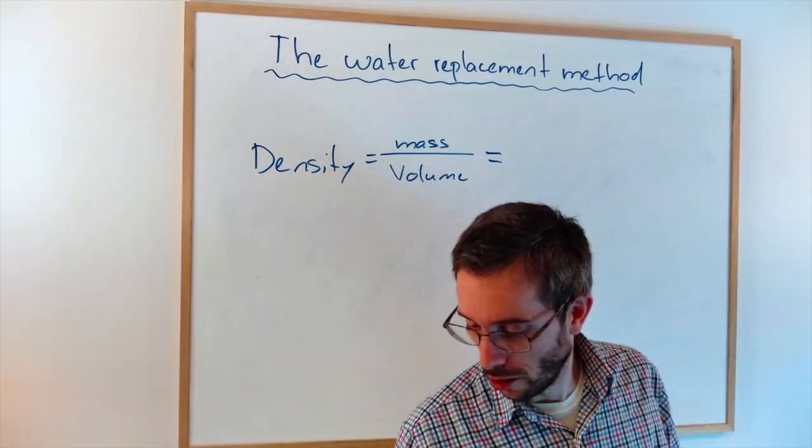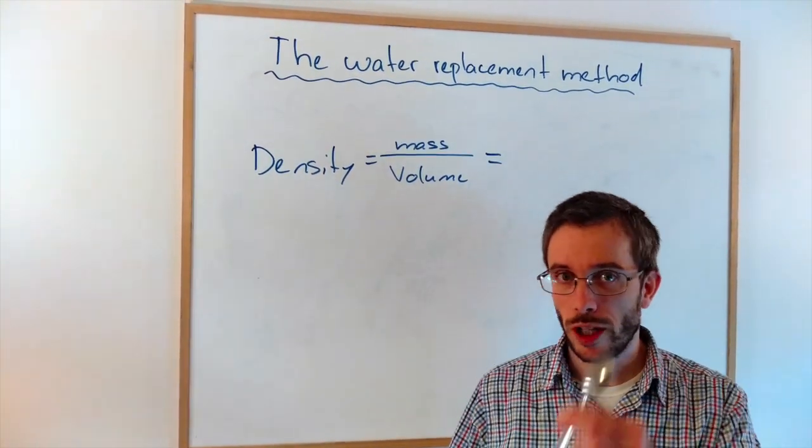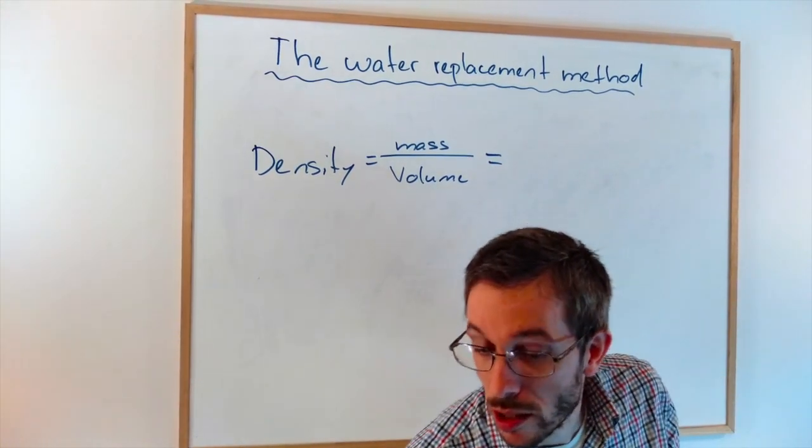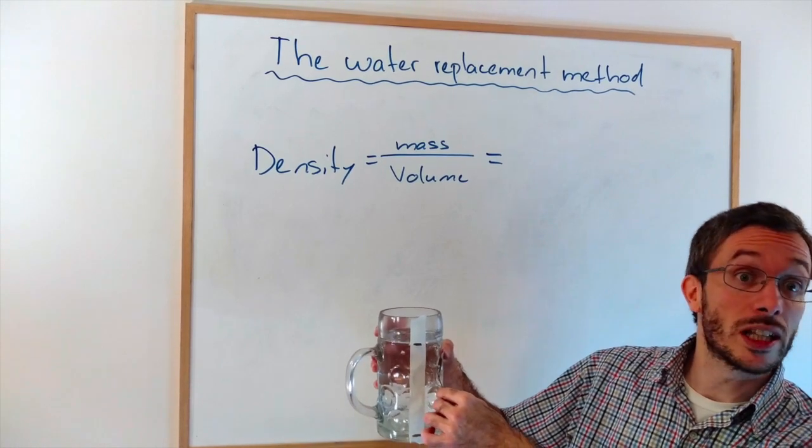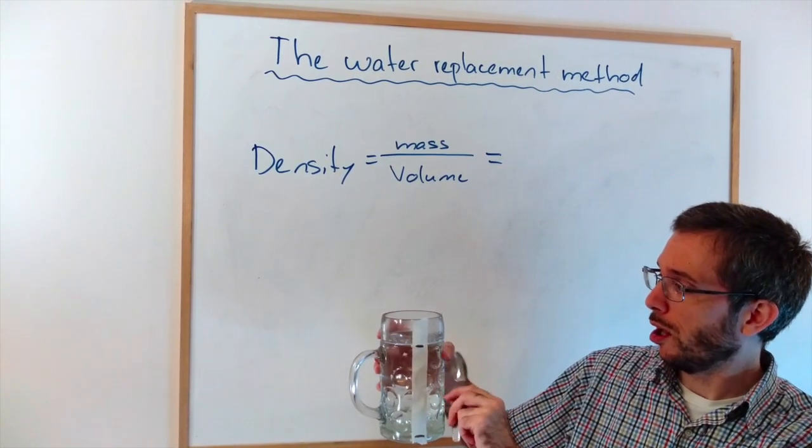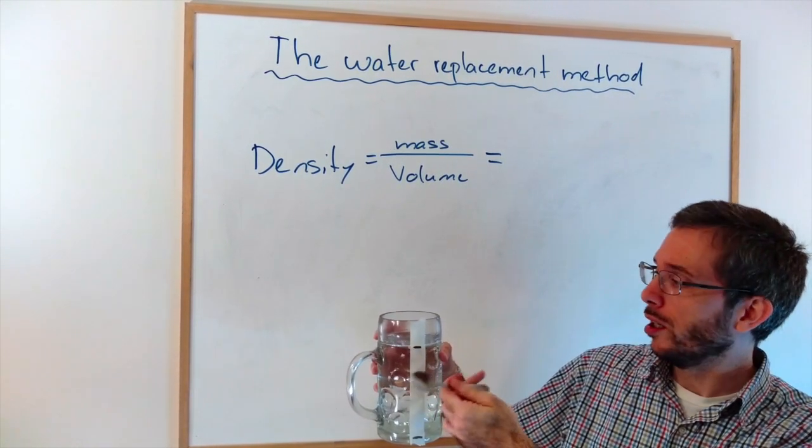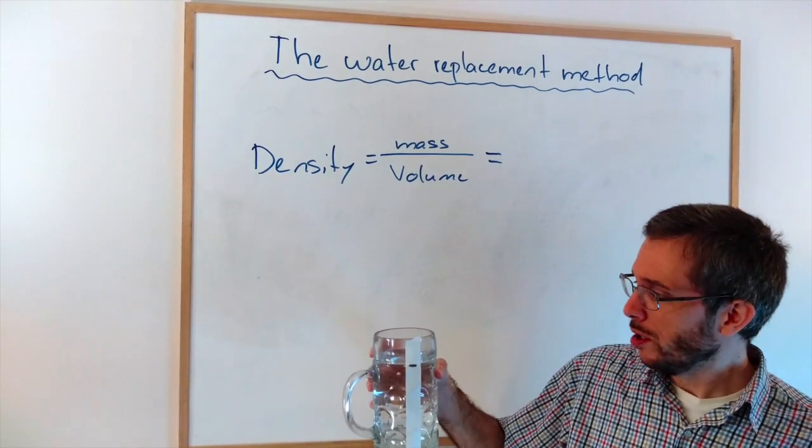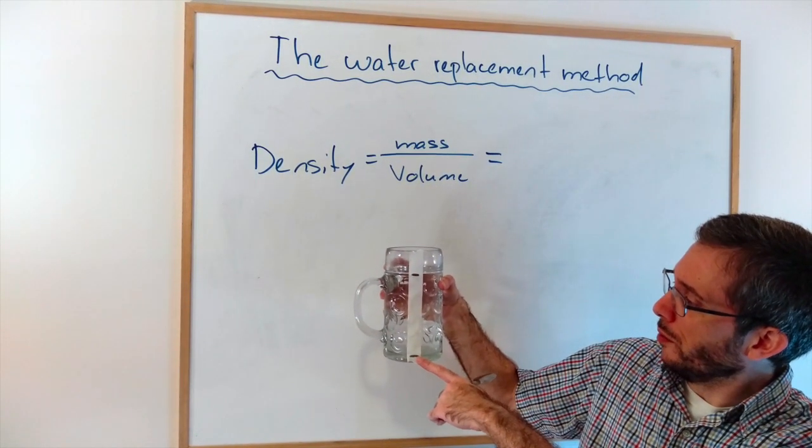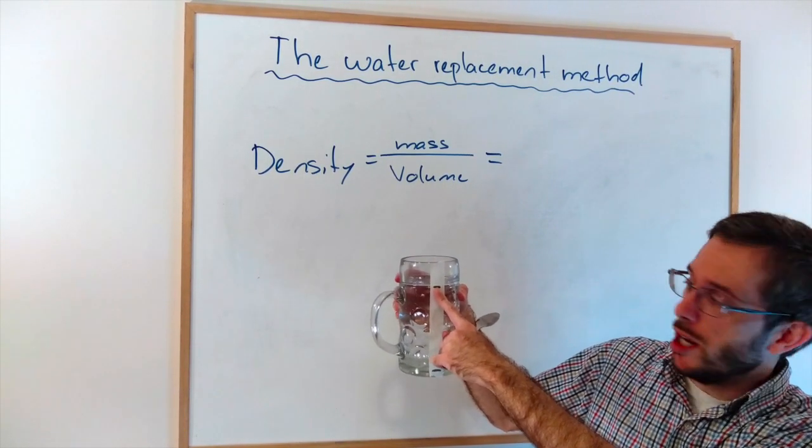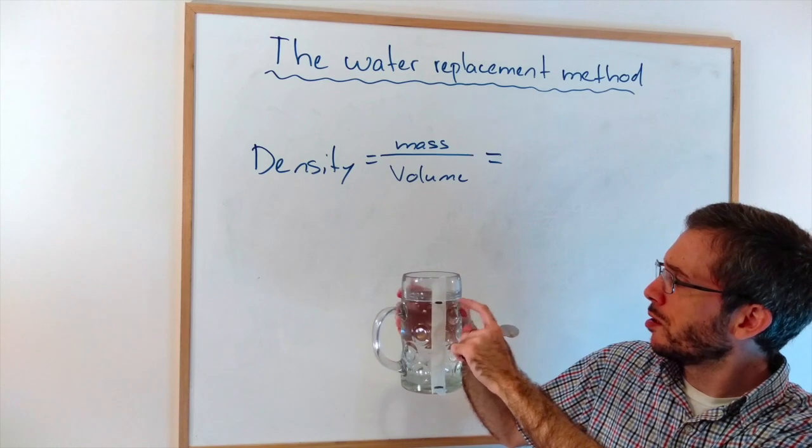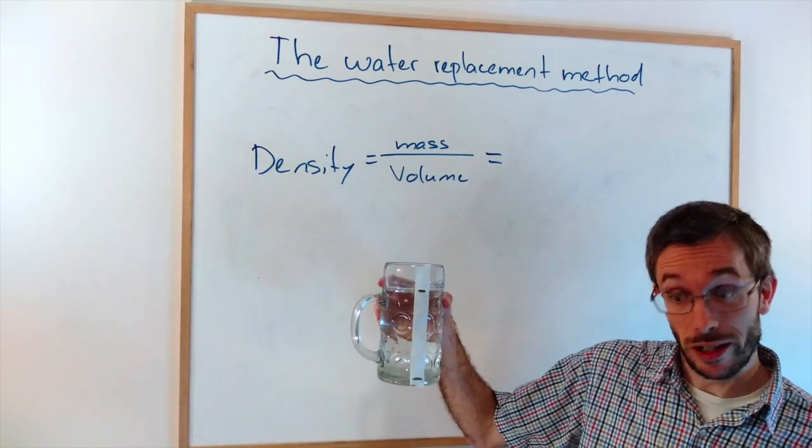So first of all, I will need a container in which I can completely submerge my spoons because if they cannot be completely submerged, the experiment will not work. If they're not absolutely completely underwater, you will not get the correct volume. So I used my cup here and I marked where the cup is empty and where is one liter of water in my cup.